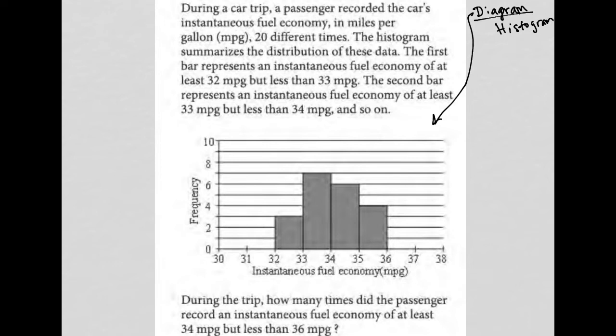So whenever I have a diagram, I like to look at my x-axis. It looks like the x-axis is instantaneous fuel economy. The y-axis is frequency. I still have no context for what any of that is referring to, but probably a car of some sort. Let's start reading and see how to answer this question.